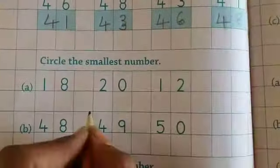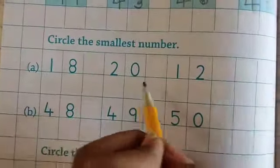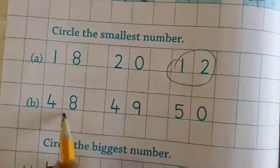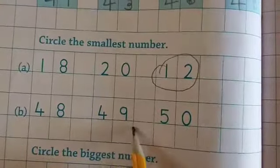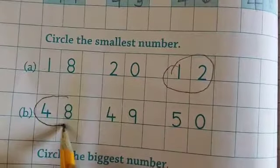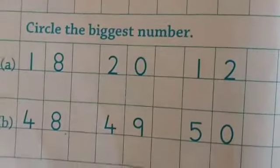Circle the smallest number. 18, 20, 12 - so 12 is the smallest number. And 48, 49, 50 - then 48 is the smallest number. Then circle the biggest number.